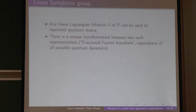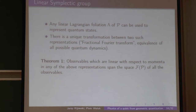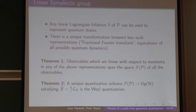Any linear Lagrangian foliation can be used to represent a quantum state in the case of linear dynamics — not only for harmonic oscillators, but all linear problems, including motion in a constant magnetic field. Furthermore, observables which are linear with respect to momenta in any of these linear splittings: if you insist on a quantization rule for all such linear observables where the definition of momentum and position varies, then this quantization rule is unique — namely, it is the Weyl quantization.